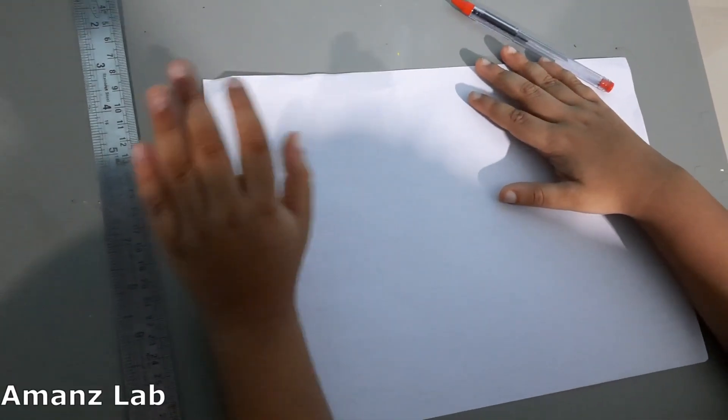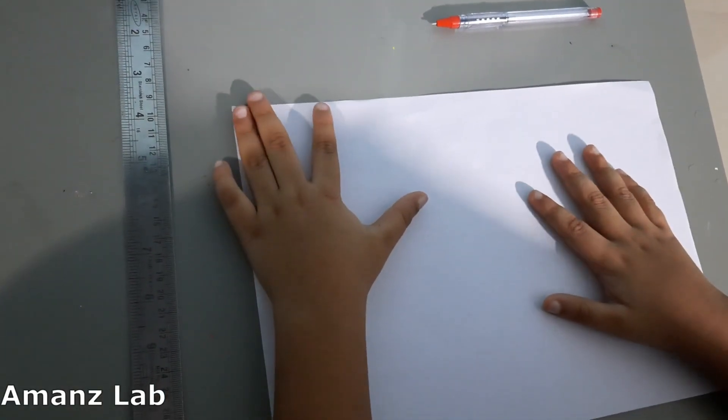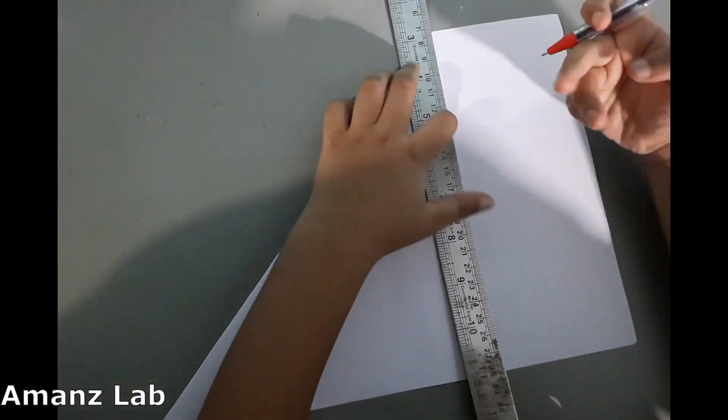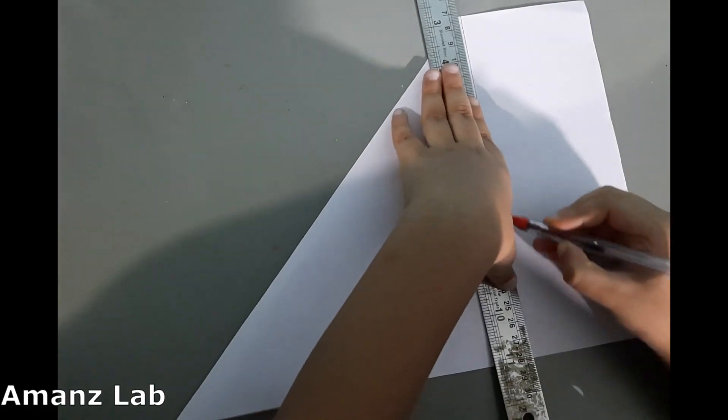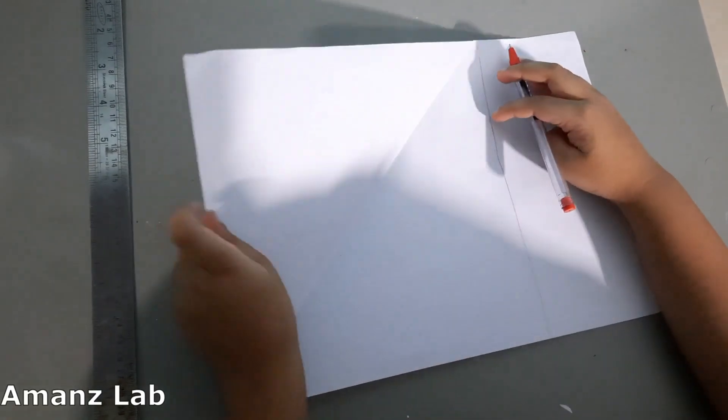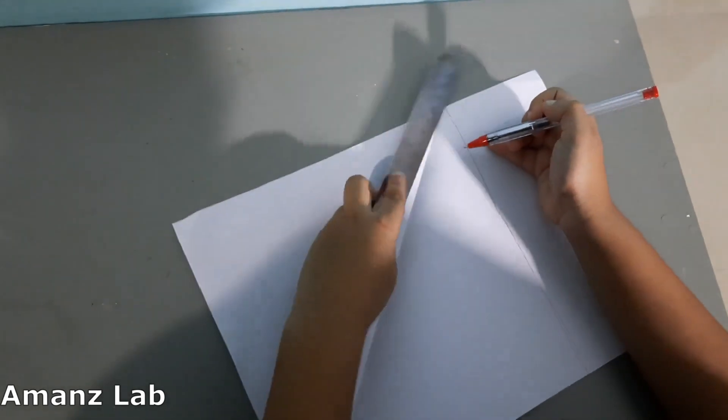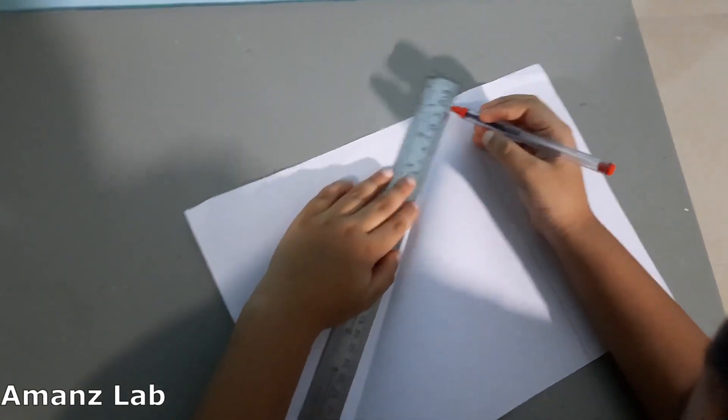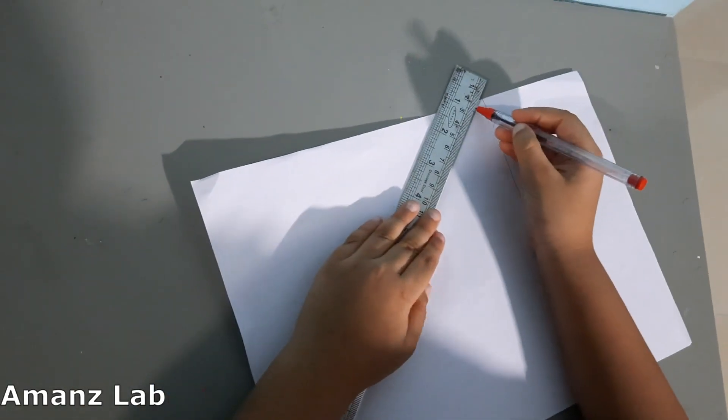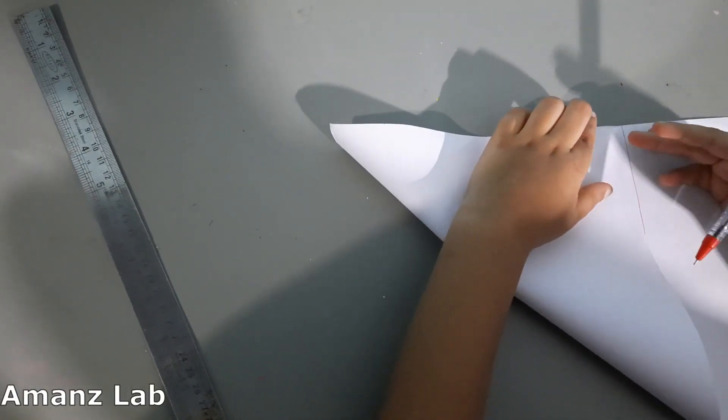First take an A4 sheet, a scale, and a pen. Let us make a square from this paper. Now let us open this. Now we have to divide the square into two triangles. Now we have to fold it like this.